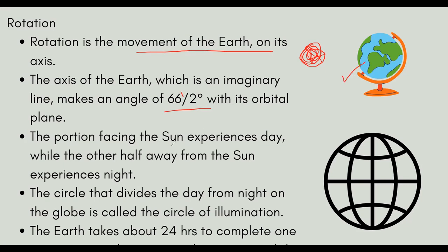Now, let's assume there is a sun. The portion of the Earth facing the sun will experience day, and the portion away from the sun will experience night. The circle that divides day from night on the globe is called the circle of illumination.